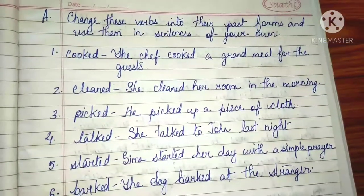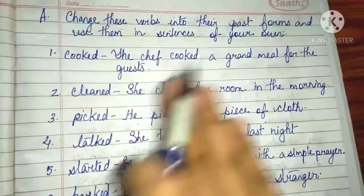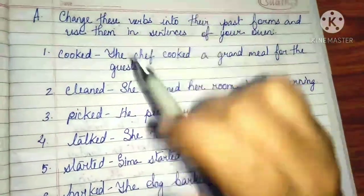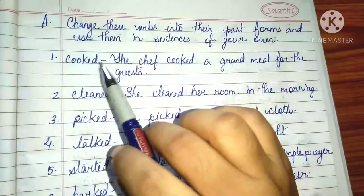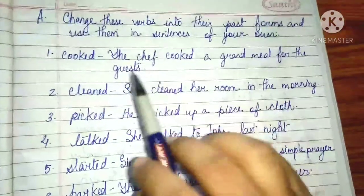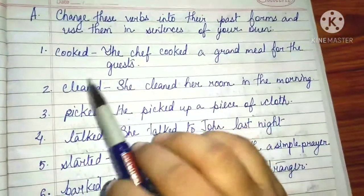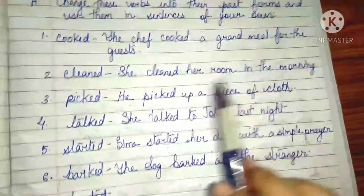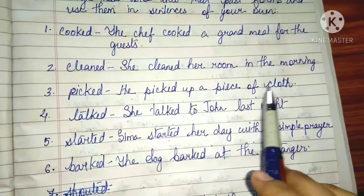After making the past form of these verbs, you will have to make sentences. For example, using 'cooked': 'The chef cooked a grand meal for the guests.' Using 'cleaned': 'She cleaned her room in the morning.'